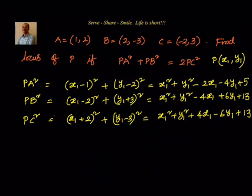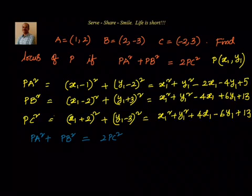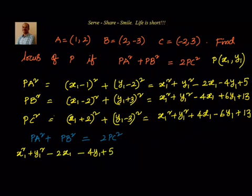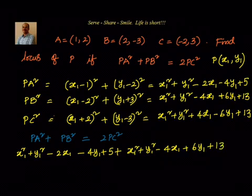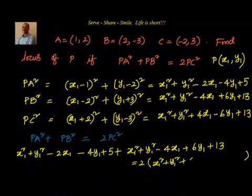Now, the condition we have been given is PA square plus PB square equals 2PC square. So we write: PA square, which is x1 square plus y1 square minus 2x1 minus 4y1 plus 5, plus PB square, which is x1 square plus y1 square minus 4x1 plus 6y1 plus 13, equals 2 into PC square, where PC square is x1 square plus y1 square plus 4x1 minus 6y1 plus 13.